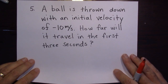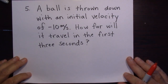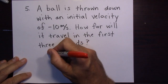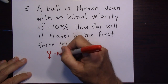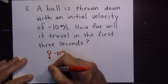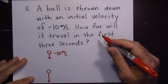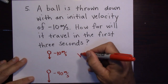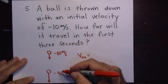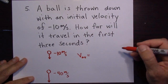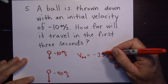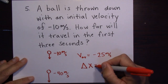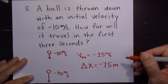Problem five: a ball is thrown down with an initial velocity of 10 meters per second. How far will it travel in the first three seconds? It starts at negative 10 meters per second. After three seconds it gains 30 more m/s, so it's going negative 40 meters per second. The average velocity is negative 25 meters per second. Delta X equals negative 25 times 3 equals negative 75 meters.